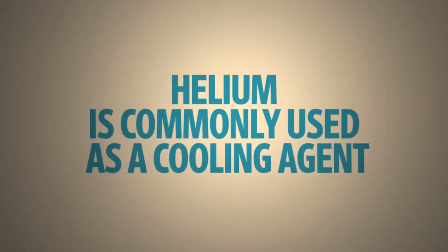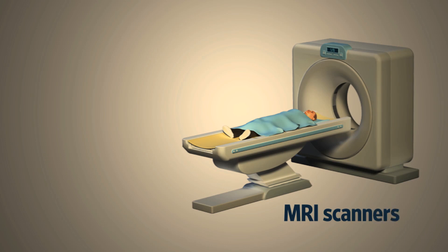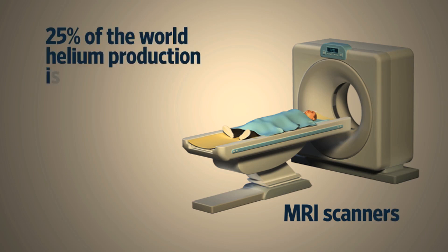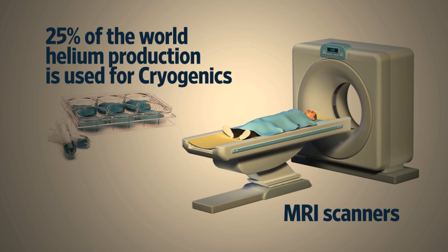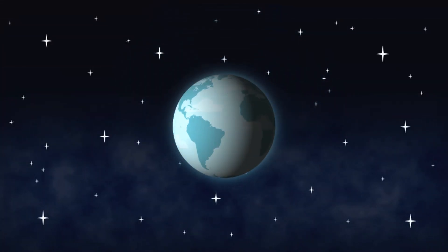When helium is not busy lifting things, it can often be found cooling things, like the superconducting magnets in commercial MRI scanners. About a quarter of the world's helium production is actually used for cryogenics. Over time, helium supplies could get strained in the way oil supplies are being strained today. If that happens, helium balloons and blimps could become a thing of the past.